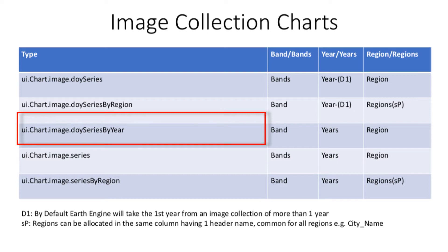Here we compare one band across different years — years are on the y-axis. For example, if you want to compare temperature of two or more years of the same region, this type of chart will be applicable. Please note that it is one band and not multiple bands in a single region. Let's go to the Earth Engine code editor and practically demonstrate this type of chart.